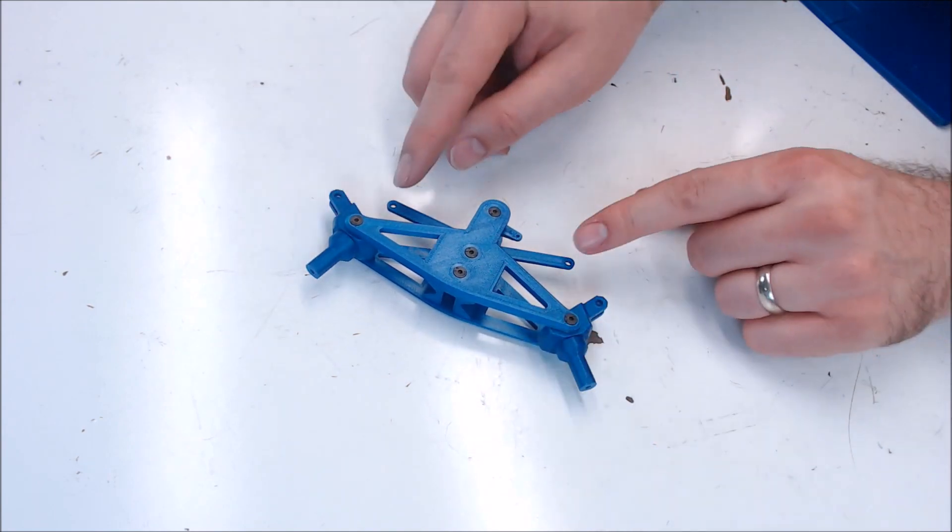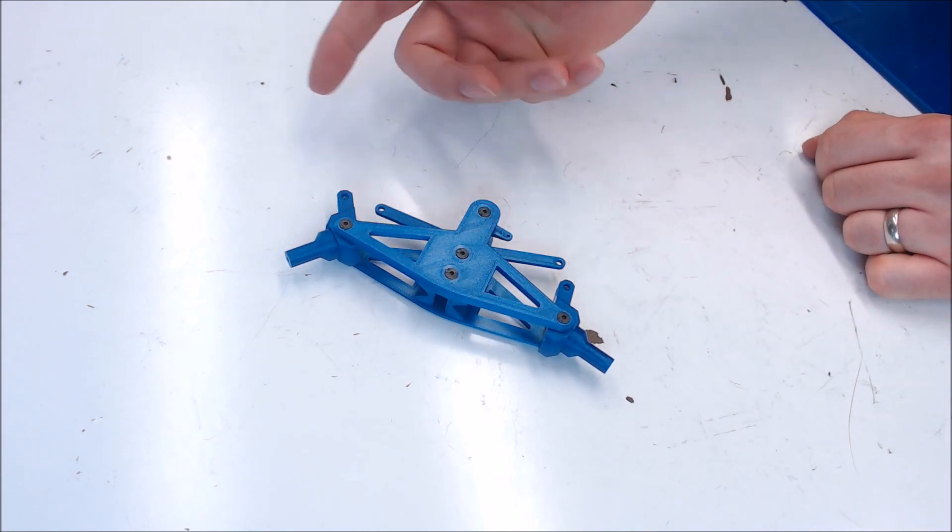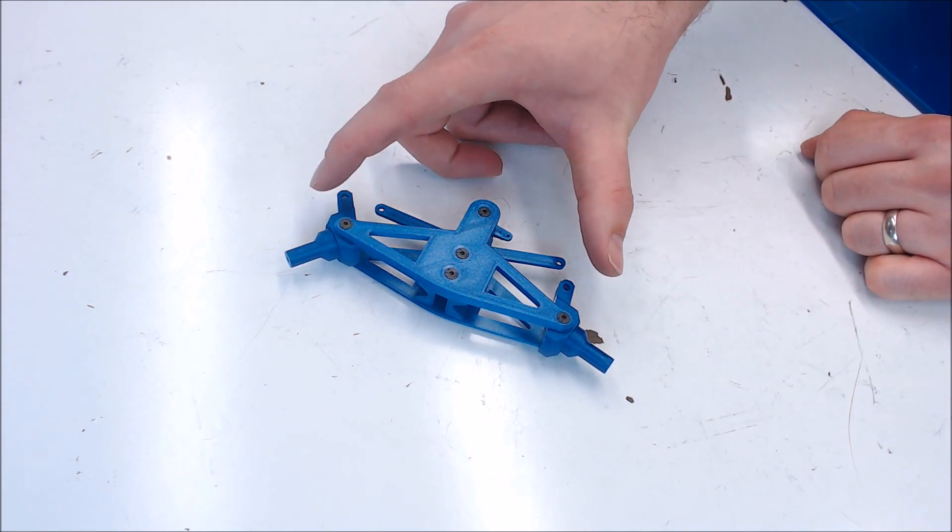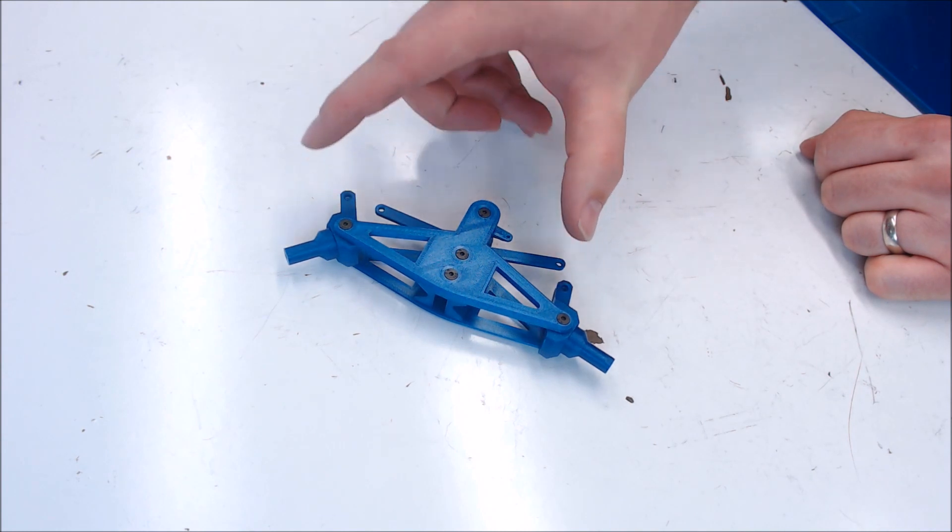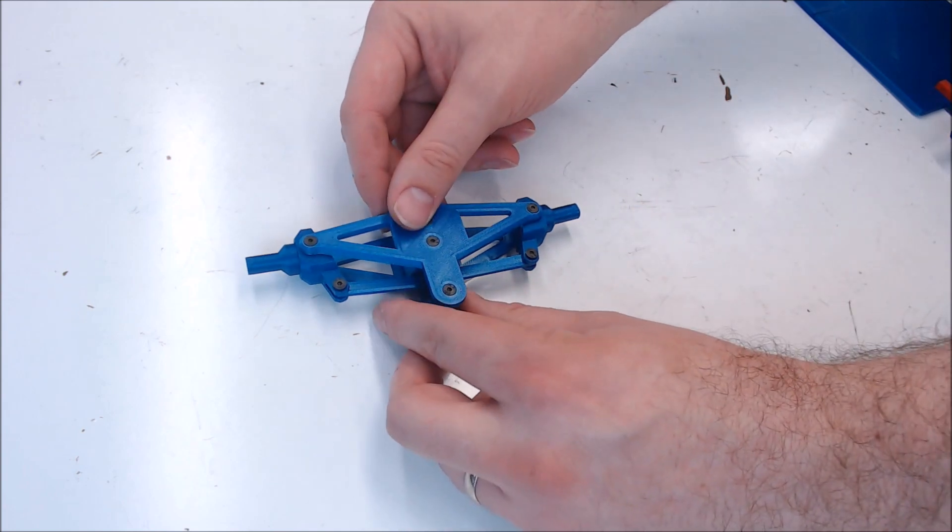Now we'll attach the links to the spindles. Again, they use button head screws for this. I'm using countersunk screws, but I'm going to use M3 x 8mm screws from the top. Both links have been attached to the spindles and the steering is complete.